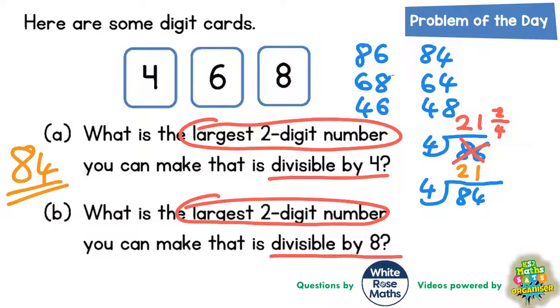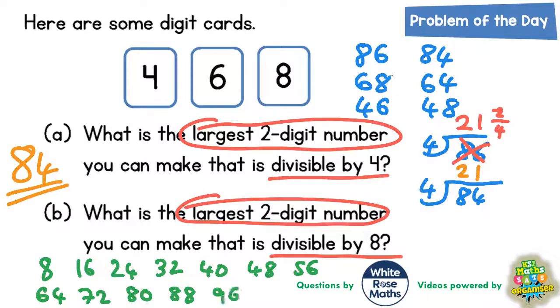You could just count up in eights and see what you get. So 8, 16, 24, 32, 40, 48, 56, 64, 72, 80, 88, 96. And I'm going to stop there. So let's see what we've got.